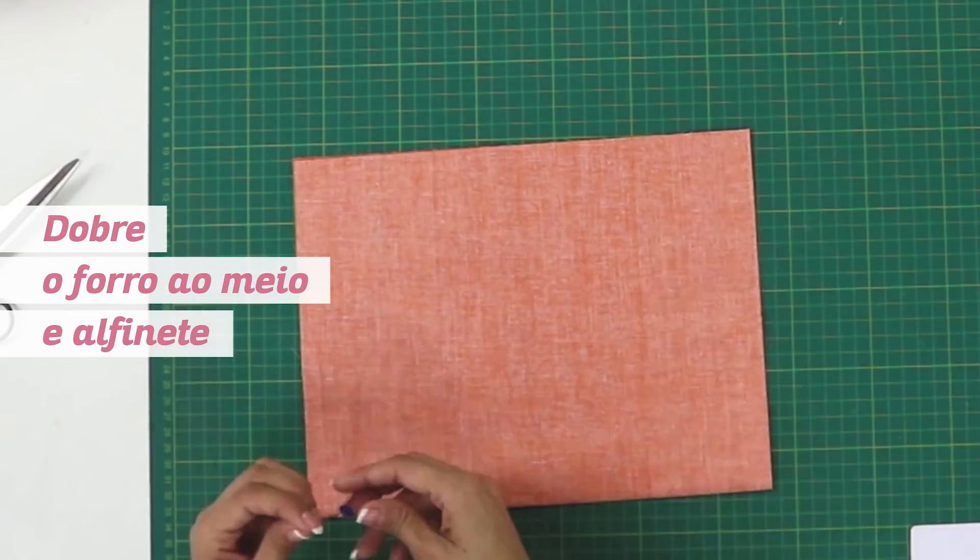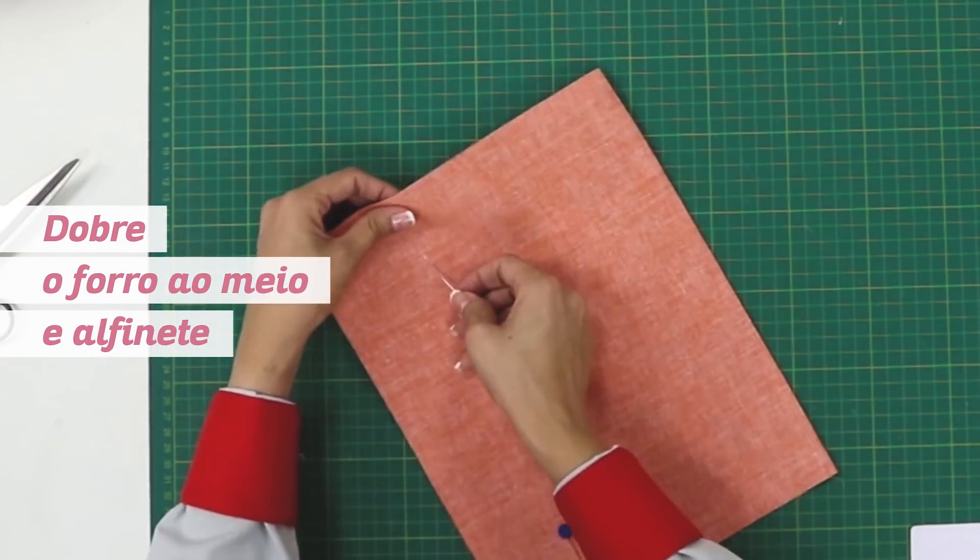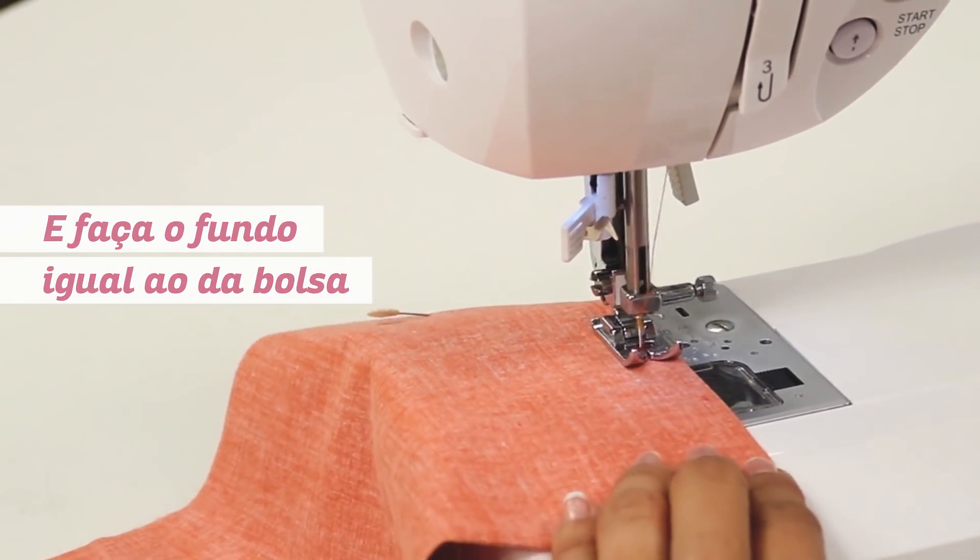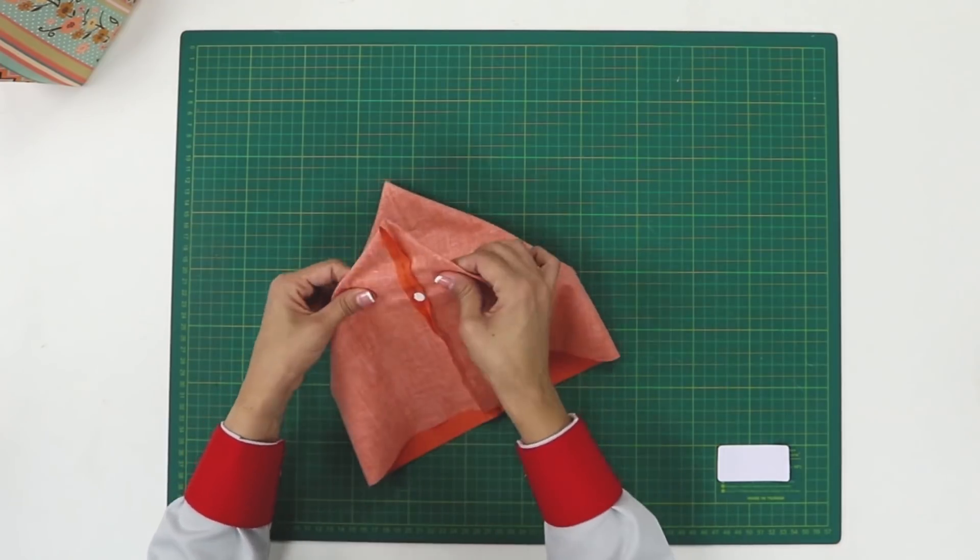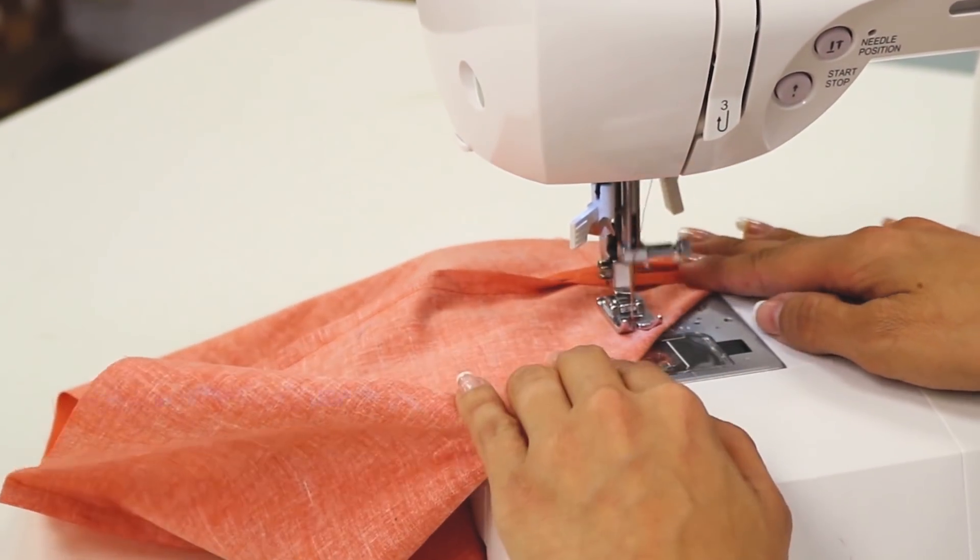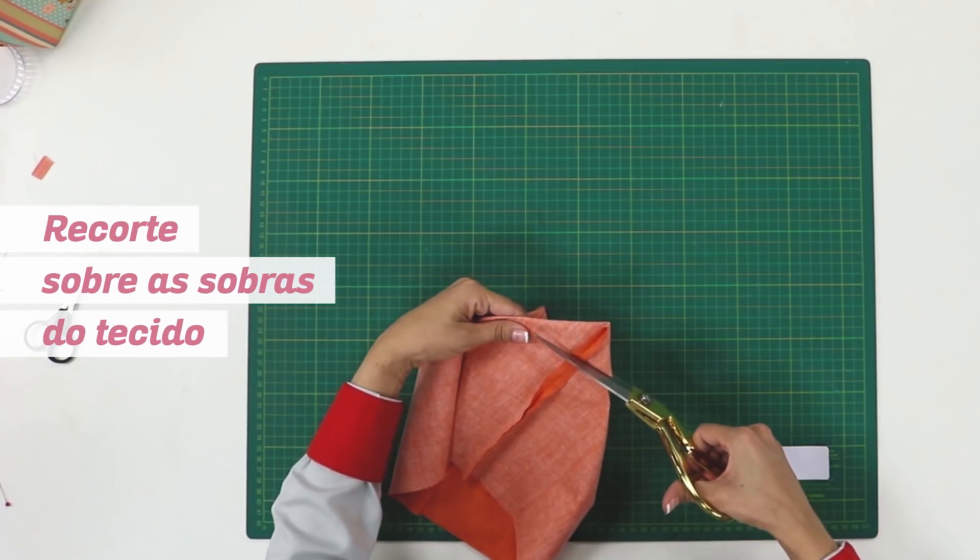Dobre o forro ao meio e alfinete. Costure nas duas laterais e faça o fundo igual ao da bolsa. Costure as sobras do tecido.